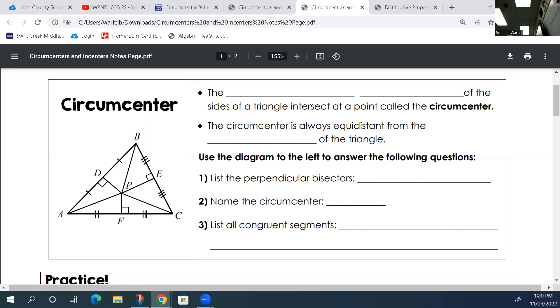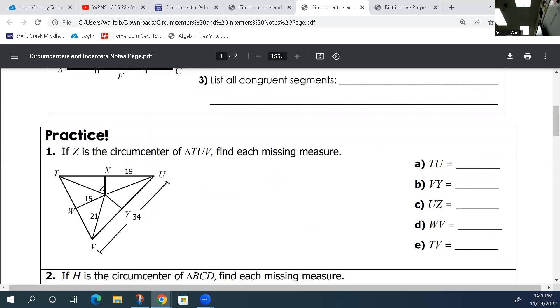The other part down here that's listed is that BD and AD are also congruent, BE and EC are congruent, AF and FC are congruent, but that's because the circumcenter is created by perpendicular bisectors. Let's go ahead and start looking at some of our problems.